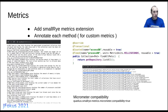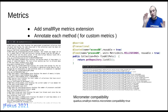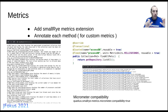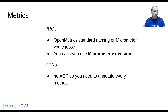Regarding metrics, you add SmallRye Metrics and you'll have the usual metrics in the output. The difference is that Spring uses Micrometer notation while Quarkus uses MicroProfile notation — they're not exactly the same. But there's a toggle in properties to enable a compatibility layer giving you Micrometer naming conventions. You can also use the Micrometer extension directly so you don't have to touch your custom metrics code.